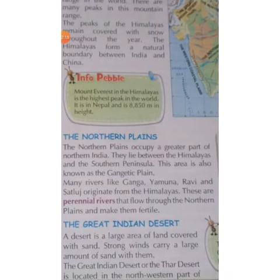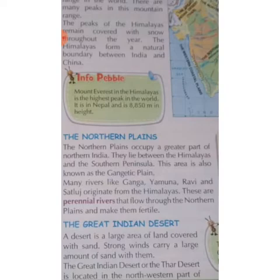Many rivers like Ganga, Yamuna, Ravi, and Satluj originate from the Himalayas, because the Himalayan peaks are covered with snow and these rivers come from that melting snow. These are perennial rivers — rivers which never dry up — that flow through the northern plains.